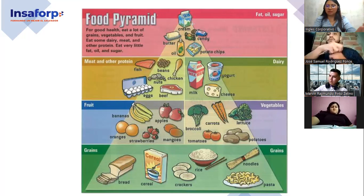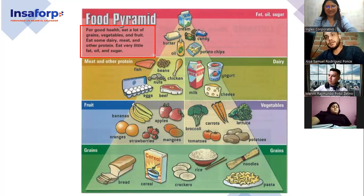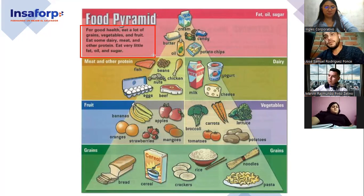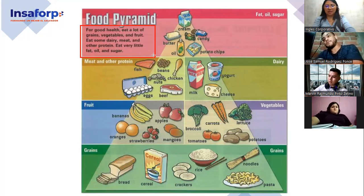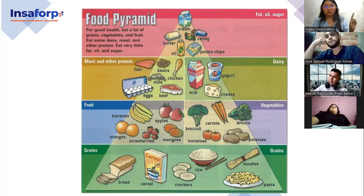And what is the advice? Hay un pequeño consejo — en esta parte, ¿qué dice? For good health, eat a lot of grains, vegetables, and fruits. Eat some dairy, meat, and other protein. Eat very little fat, oil, and sugar. Don't forget that you need to eat very little fat, oil, and sugar. Y como nos gusta el azúcar, ¿verdad? That's very normal, but don't forget this advice. So, this is some vocabulary and we are going to use this food vocabulary to express likes and dislikes.